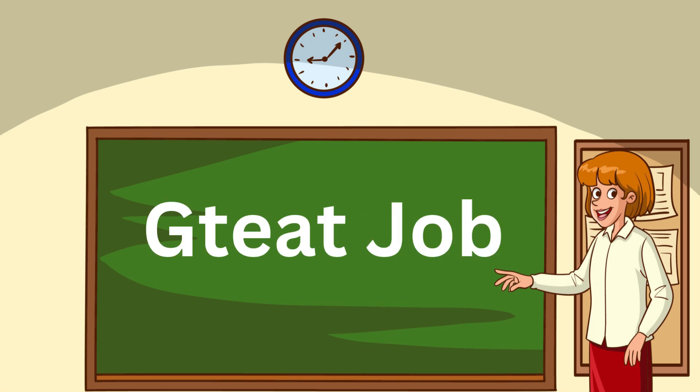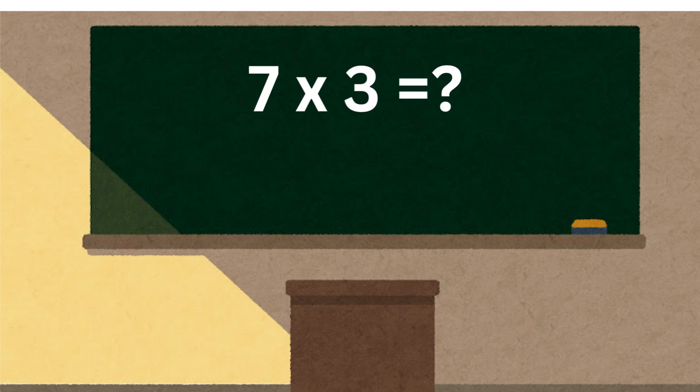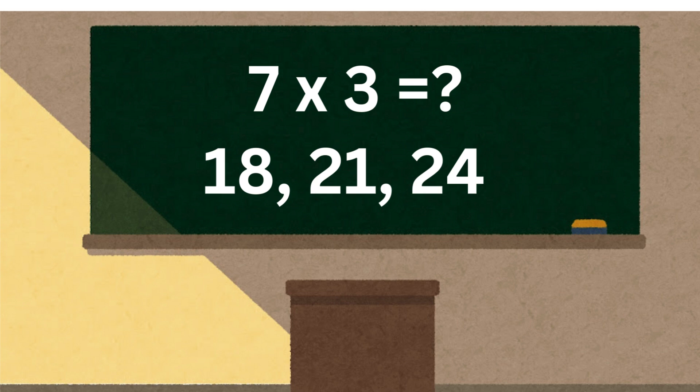Great job. You've just learned the table of 7. Let's test what we learned. What's 7 times 3? Is it 18, 21, or 24? That's right. 7 3s are 21.